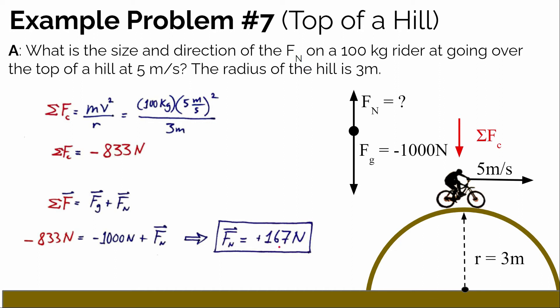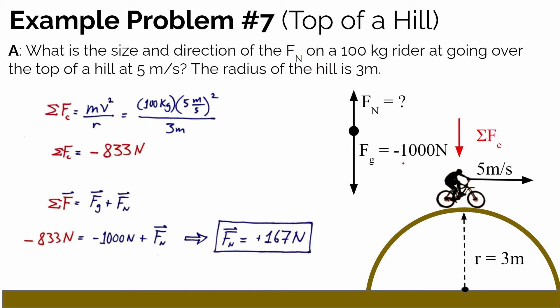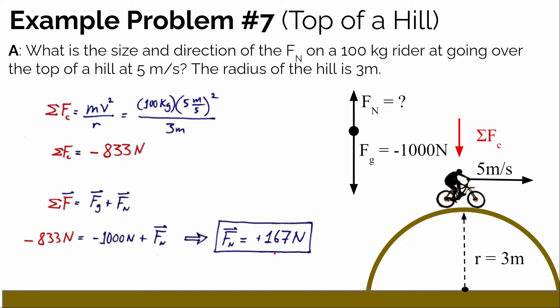Let's think about whether this makes sense. Whenever you go over the top of a hill — whether in a car, roller coaster, or on a mountain bike — you feel a little bit lighter. The normal force gives us our sensation of weight. The biker is used to experiencing a normal force of 1,000 newtons when at rest. But going over the hill, the normal force is only 167 newtons, so they feel substantially lighter as they go over the top.